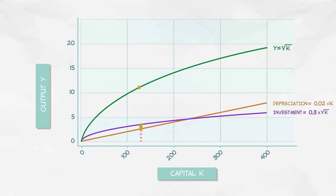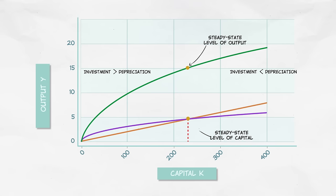So to the left of the steady state, we have investment greater than depreciation, and the capital stock is growing. To the right of the steady state, we have the opposite. Depreciation is greater than investment, and the capital stock is shrinking. Either way, we always end up moving towards the steady state.